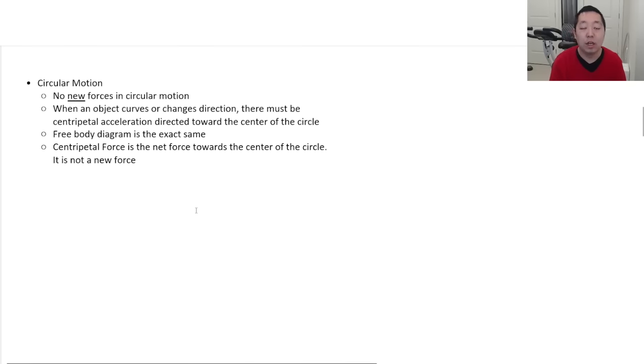Circular motion. There are no new forces when you draw your free body diagrams in circular motion. This is the most important thing I tell you. Some people think that there's new forces to include. There are no new forces when you draw the free body diagram for circular motion. Circular motion, or centripetal acceleration, which is a new kind of acceleration we talk about in circular motion, is when an object curves or changes direction. The velocity vector doesn't stay in the same axis. That's due to a centripetal acceleration. Now, that centripetal acceleration is always directed towards the center of the circle, but the free body diagram is the exact same.